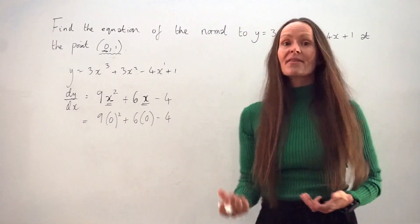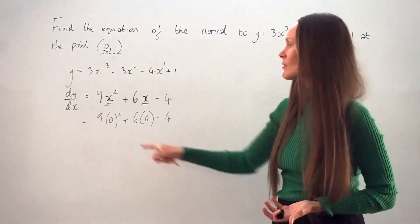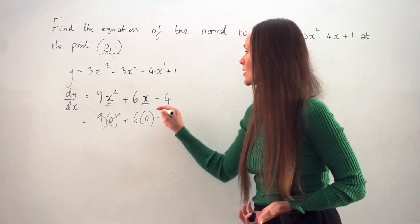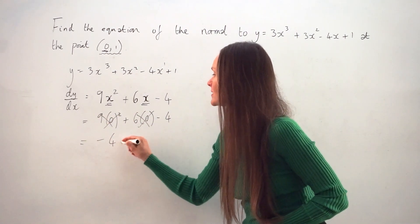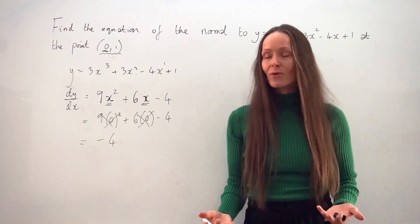So you know that anything multiplied by 0 is always 0. So this term is 0, this term is 0. So the gradient of the curve at that point is going to be negative 4.